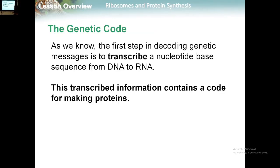What do you mean by genetic code? The genetic code is the sequence of the DNA inside each cell. To form the protein from this genetic code, you have to transcribe it into RNA, so the DNA must change into RNA. This transcription information contains a code for making proteins. Let's start with the transcription process.